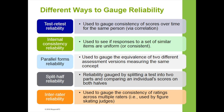Reliability is about consistency, and consistency can be measured in different ways. There are five different ways to gauge test reliability: test-retest, internal consistency reliability which is gauged using coefficient alpha, parallel forms reliability, split half, and the last one is a special case where you have multiple raters, called inter-rater reliability.